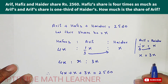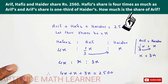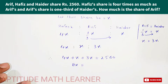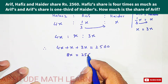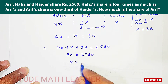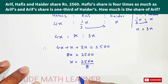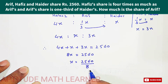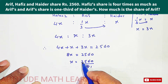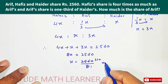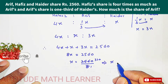The next part asks how much is the share of Arif. We add the shares of Arif, Hafiz, and Hader: x + 4x + 3x, which becomes 8x equal to two thousand five hundred and sixty. So x equals 2560 divided by 8. Dividing 2560 by 8, we get the answer: x equals three hundred and twenty.